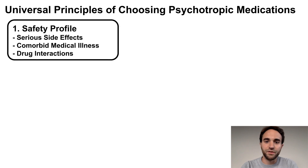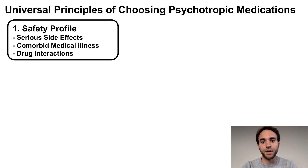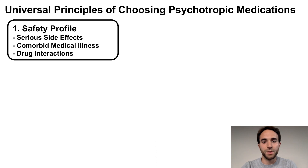The first principle involves the safety profile of medications. Remember, as a doctor, one of your fundamental obligations is to do no harm. As such, you should not recommend a medication where the potential harm outweighs the potential benefit. Specific factors to consider here are the medication's risk of serious or irreversible side effects such as organ failure, the presence of comorbid medical illness that could increase the risk of serious side effects, or drug-drug interactions between the psychotropic and any other medications the patient may already be taking.